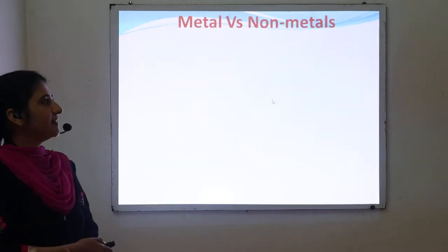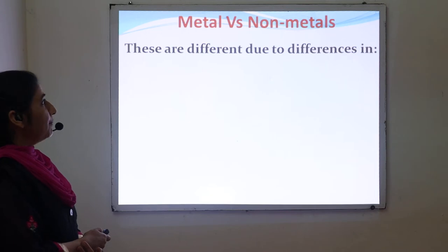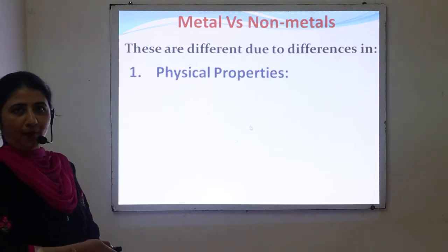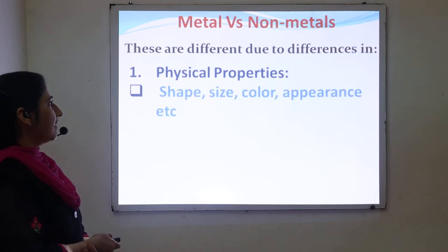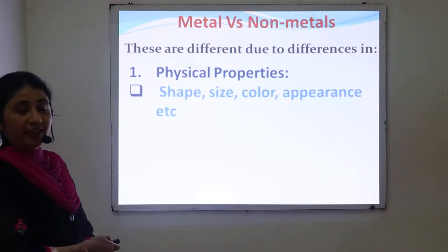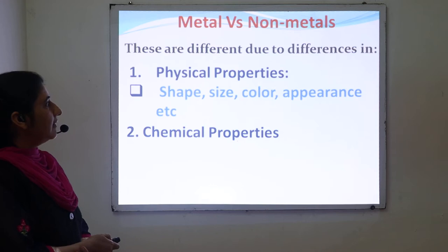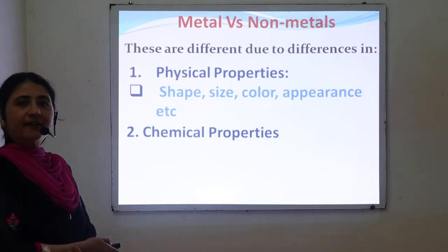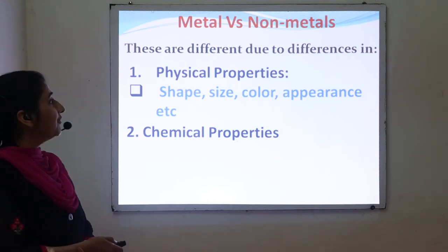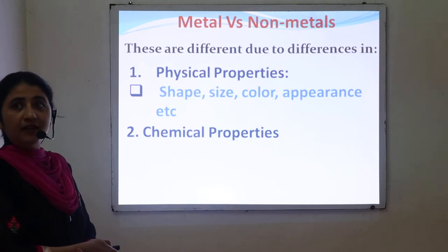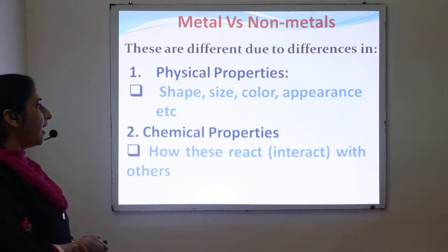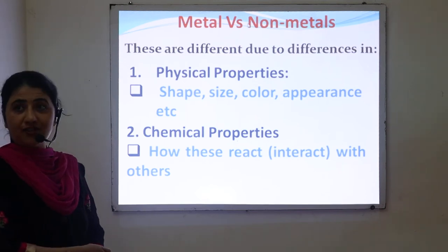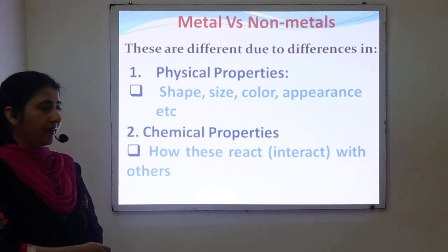Next is metals versus non-metals. Metals and non-metals are different due to differences in their physical properties — meaning they differ with respect to their shape, size, color, and appearance. They are also different due to differences in their chemical properties, which means how these metals and non-metals interact with another reagent to form different products.